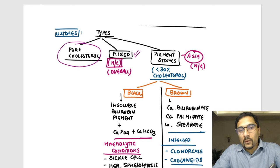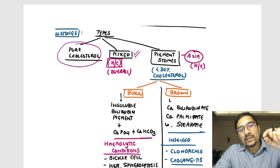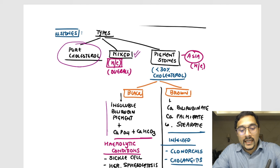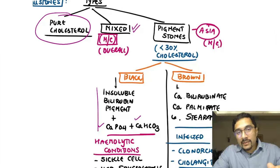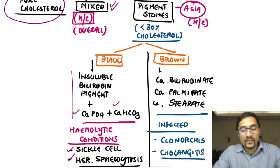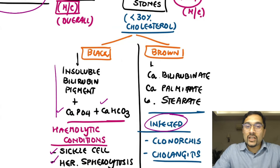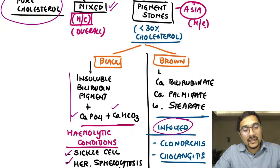Pigment stones have less than 30% cholesterol and can be black or brown. Black pigment stones form in hemolytic disorders — they are insoluble bilirubin pigment polymer along with calcium phosphate and calcium bicarbonate, seen in conditions like sickle cell anemia and hereditary spherocytosis. Brown pigment stones are seen in infected bile due to Clonorchis or cholangitis, and are a combination of calcium bilirubinate with palmitate and stearate.